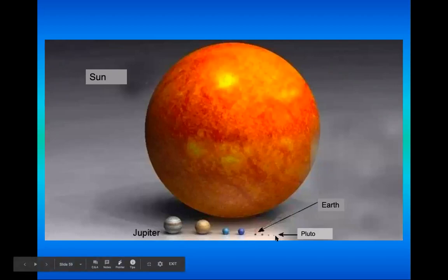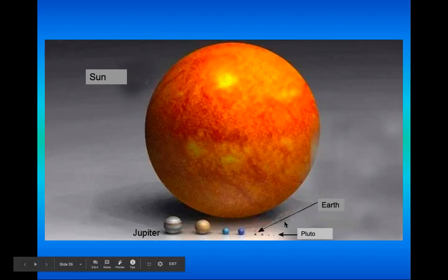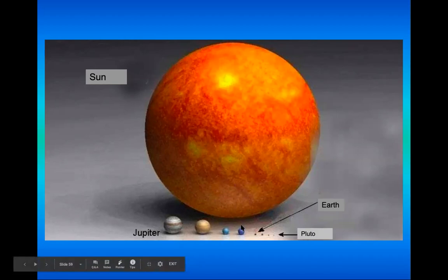What has happened to Pluto? Maybe Pluto is just one pixel in this image. Look at the Earth compared to the sun — we're just a tiny speck on the sun.